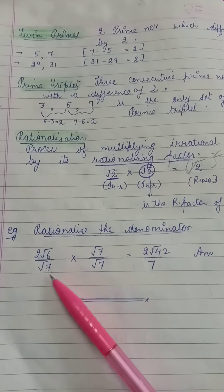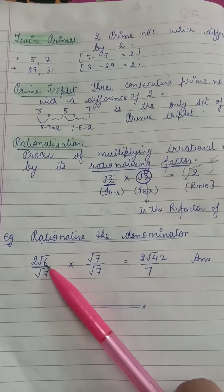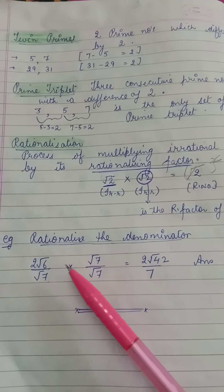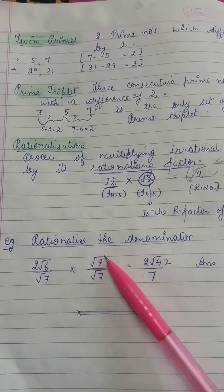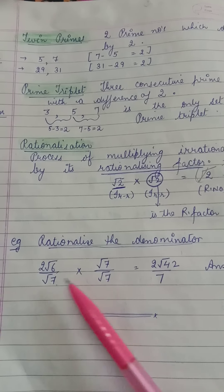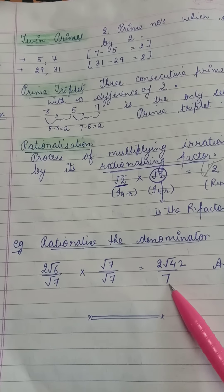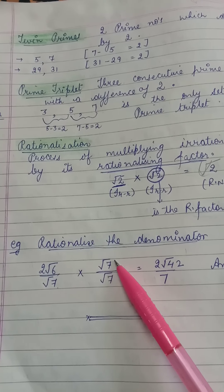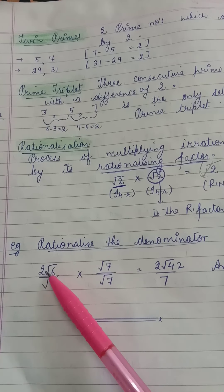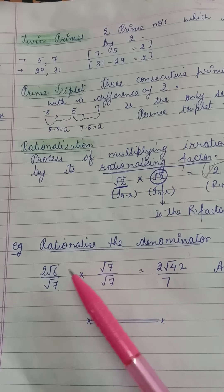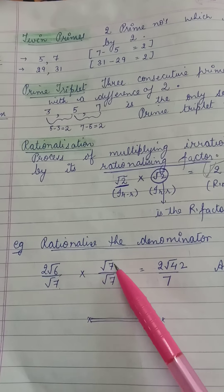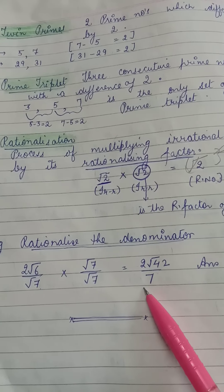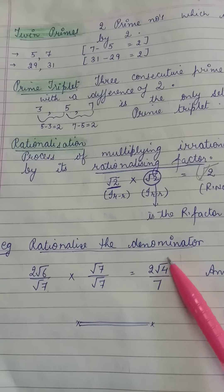Example: rationalize the denominator. We need to remove the root from the denominator. Multiply numerator and denominator by root 7. Root 7 into root 7 equals root 7 squared, which is 7. In the numerator, 2 root 6 multiplied by root 7: numbers outside the root multiply together and numbers inside the root multiply together, giving 2 root 42. The final answer is 2 root 42 upon 7.